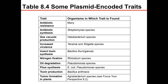Some types of plasmids include antibiotic resistance plasmids found in many organisms, whereas certain antibiotic synthesis plasmids are found only in Streptomyces species. Gas vacuole production is only found in Halobacterium species. There is increased virulence found in Yersinia and Shigella, insect toxin synthesis in Bacillus thuringiensis, and tumoral formation in plants in Agrobacterium.